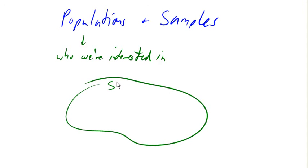More appropriately, first-year students at a college. It could be different populations depending upon what our research is. It could be just the students at your college, the students at all colleges in the state of Washington, all students at any college in the U.S., or students only at public or private colleges. So we really want to be clear about who the population of our study is.